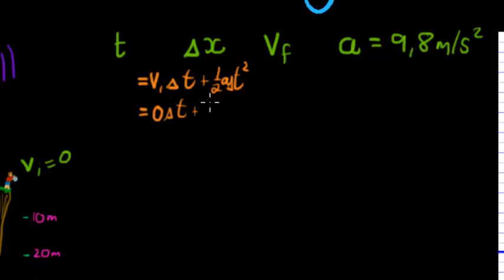When we enter the values that we know, it's zero delta t plus a half times 9.8 acceleration times delta t squared, and that simplifies to 4.9 t squared.